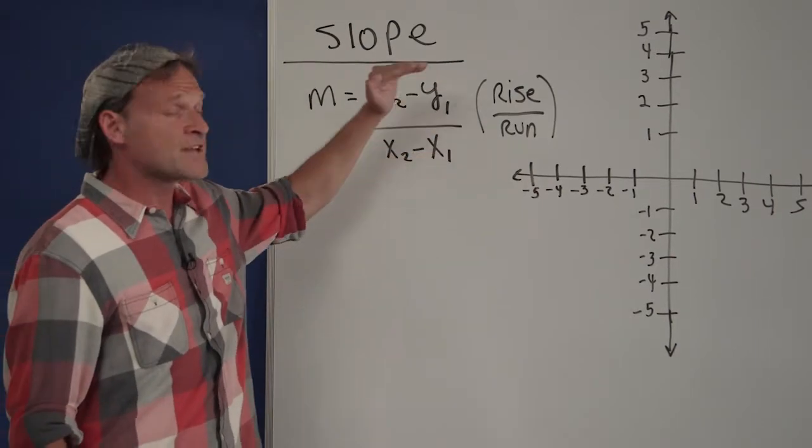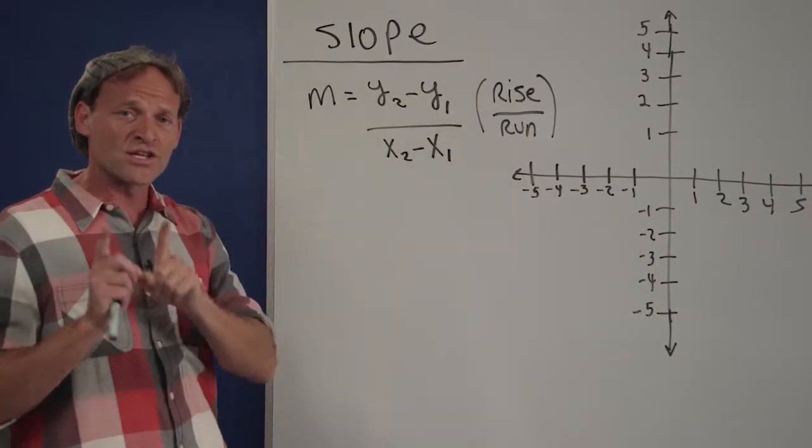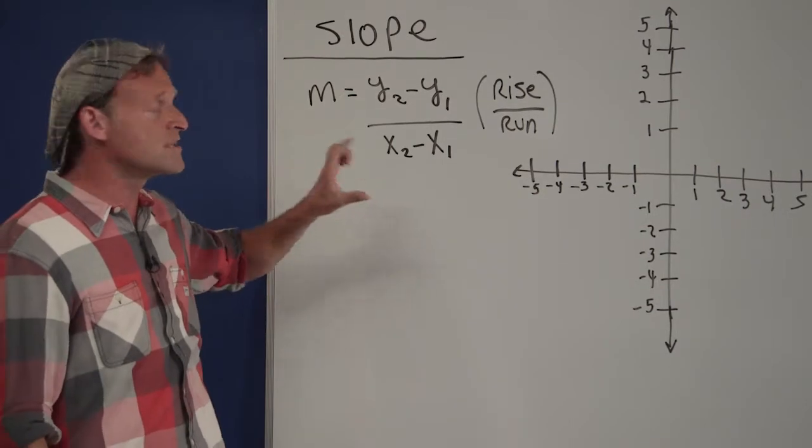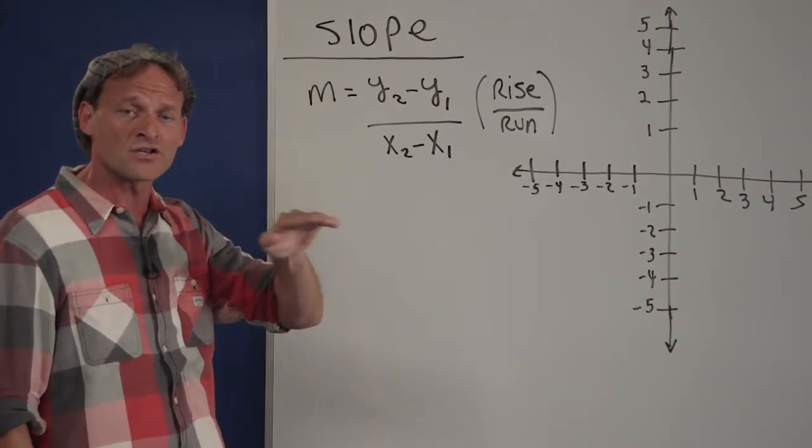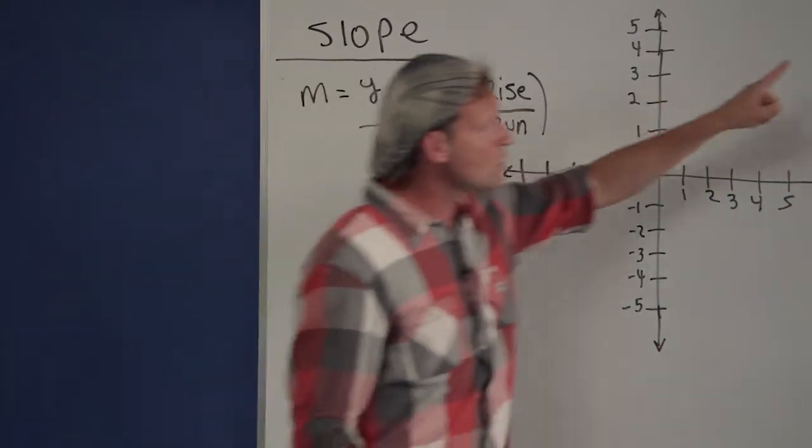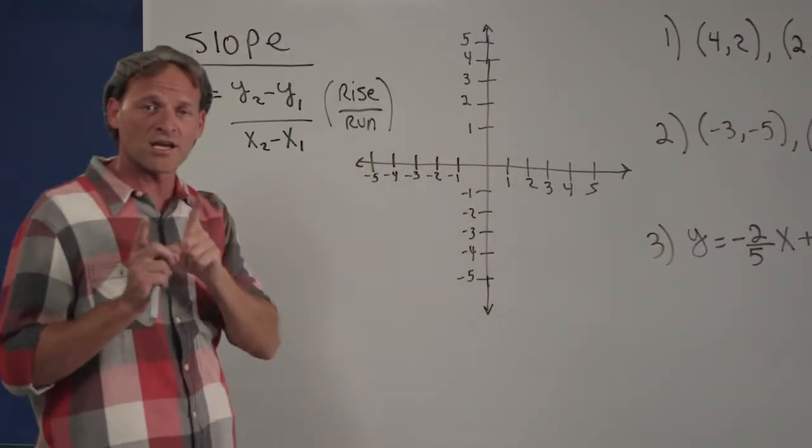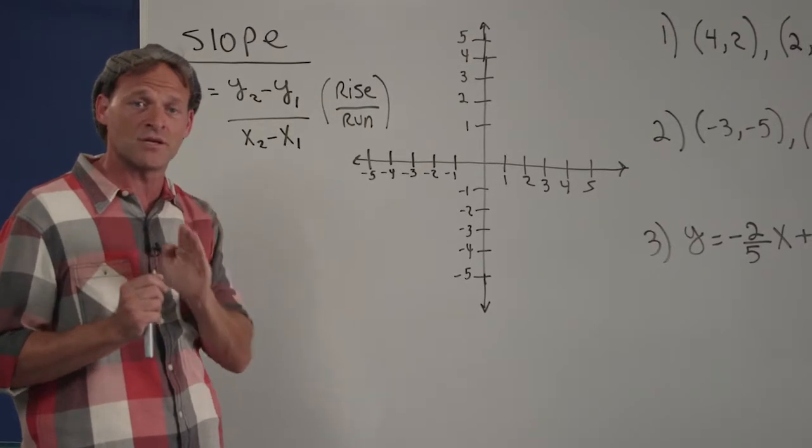A lot of people remember it as rise over run. Essentially what we're doing is trying to find the difference in the vertical height and divide that by the difference in the horizontal height. In other words, we're going to take these two points, plot them, and then connect the dots and see how steep it is.